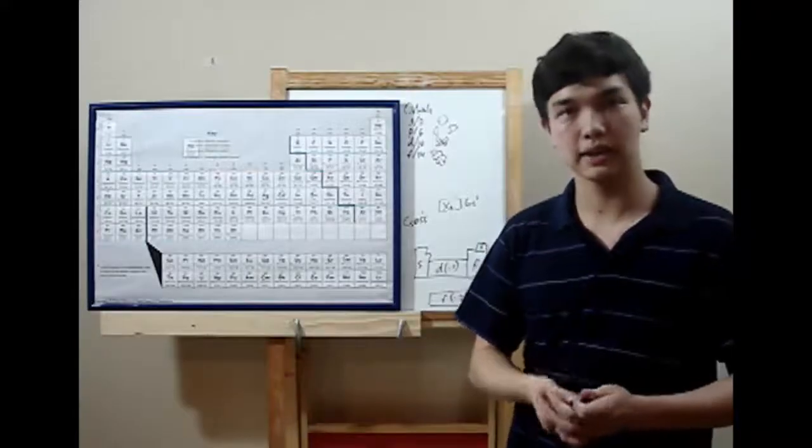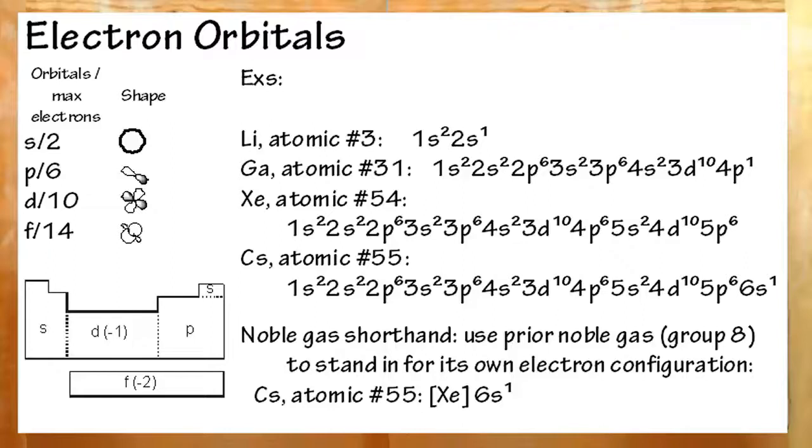Okay, to recap. The four types of orbitals in the quantum model are S, P, D, and F. S holds two electrons max, P 6, D 10, F 14. Using these, you can block the table. Groups 1 and 2 and helium are S block. Groups 3 through 8, with the exception of helium, is the P block. D block is your transition metals, and F is your lanthanides and actinides.